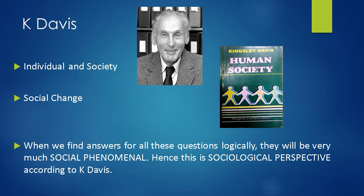The other concept we are going to talk about is social change. Social change can happen in any direction — it could be cyclical, it could be multilinear, it could be linear, or it could be multidimensional. It could be slow or it could be fast. And then how these changes are happening and how we are going to measure these social changes — all these are logical questions we find when we are going to study society. When we get the answers for all these questions, the answers will be very much a social phenomenon.